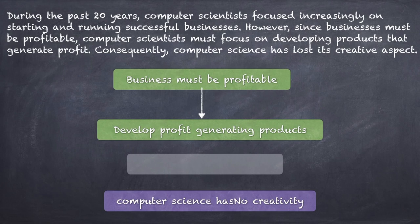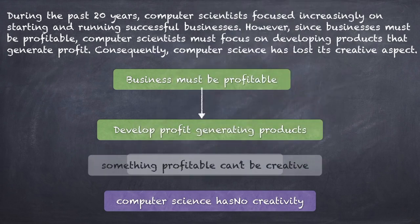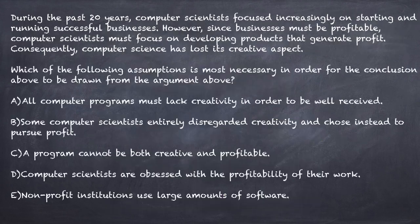But then the word 'consequently' introduces the conclusion: 'computer science has lost its creative aspect.' How did we get from 'should make profit-generating products' to 'lack of creativity'? There is a gap. The author must be assuming that whatever is profitable cannot be creative. If I put that assumption in, the argument makes sense: something profitable cannot be creative, scientists need to make something profitable, therefore they will not be able to make something creative. That is our assumption for the argument.